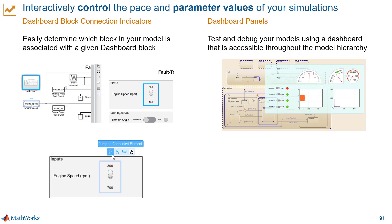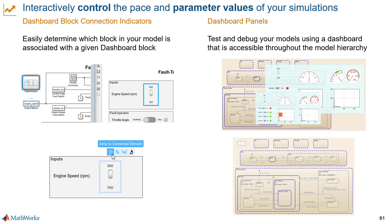So you can jump in and out of referenced models, subsystems, and Stateflow charts, and you can always see those indicators — which can be valuable for testing and debugging workflows. When you're not using a panel, you can just double-click it to minimize it, so it stays visible but takes up less space.